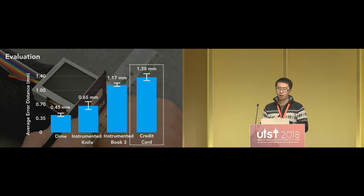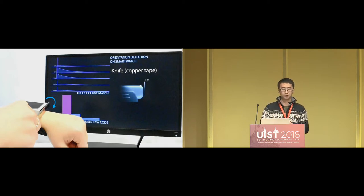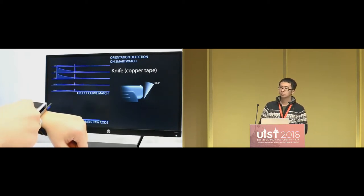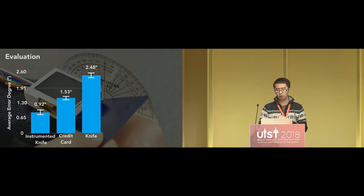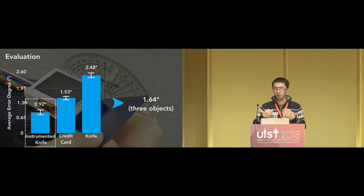Among the four tested objects, the metal credit card has the lowest accuracy, possibly because of its unbalanced material distribution. For sensing hinging, we collect another database of footprint references by hinging different objects. The hinging angle is estimated by comparing raw sensor values with the hinging reference footprints in the database. Using a similar evaluation to sliding, the average error degree across three objects is about 1.64 degrees. Most errors come from angles away from the sensor. The instrumented knife has the best performance since the copper tape can be sensed even when it is far away from the sensor.